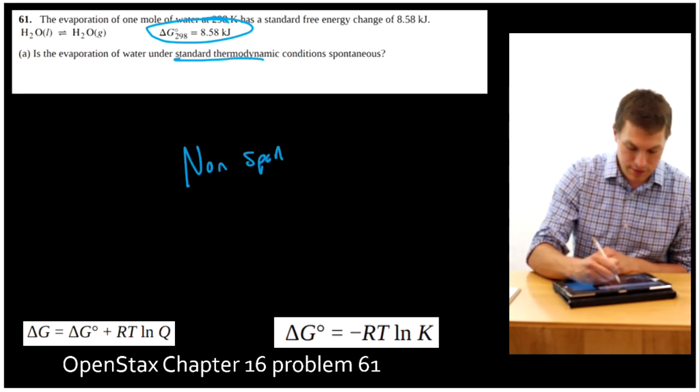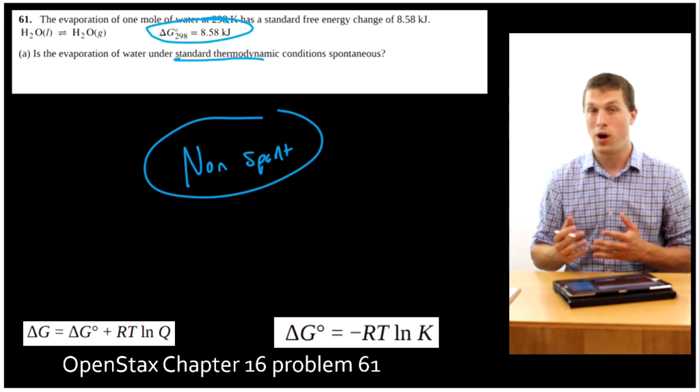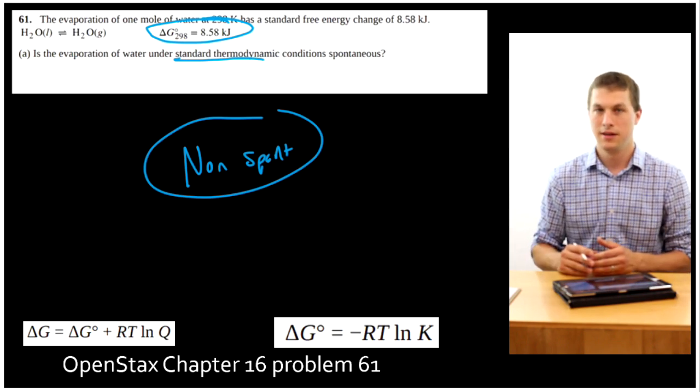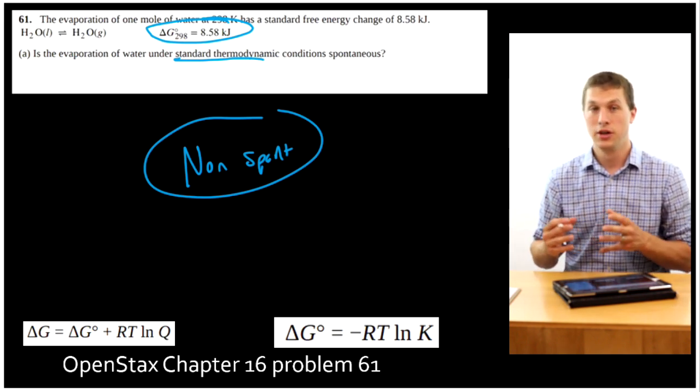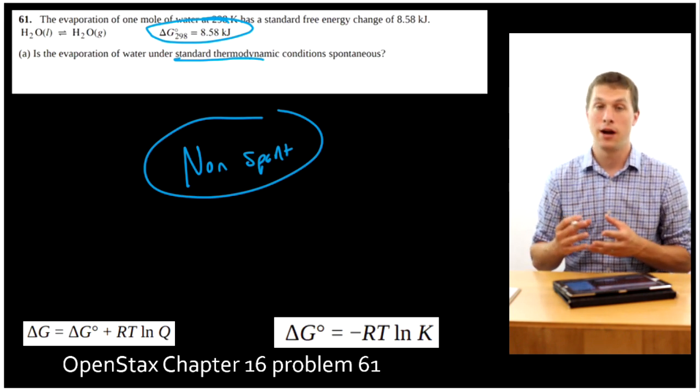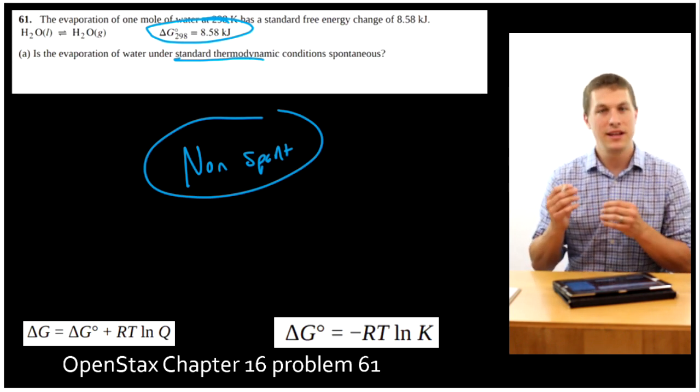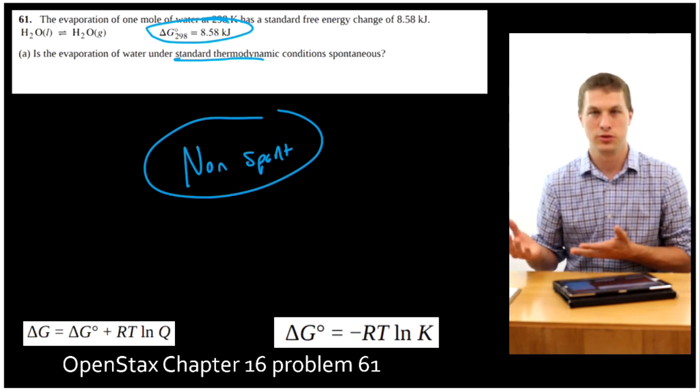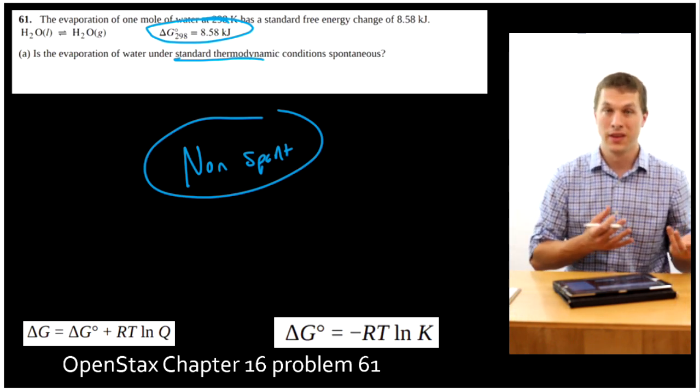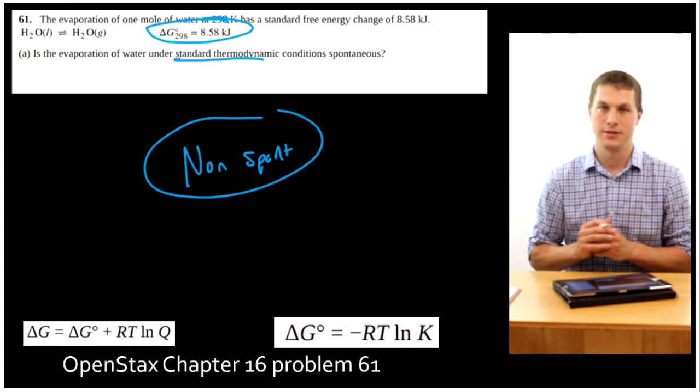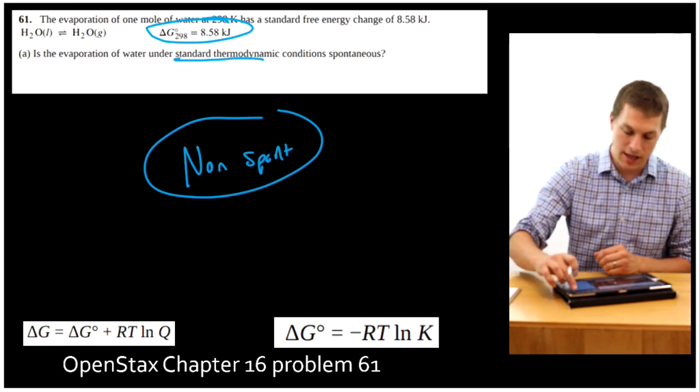Of course, it's very obvious right away that the evaporation of water is sometimes spontaneous, right? You make water really hot, it evaporates. You put water in a really dry environment, it evaporates. So that right there should tell you there's some conditions under which it's spontaneous and some which aren't. The standard conditions, it's not spontaneous under. Okay, let's take a look at the next part of the problem.